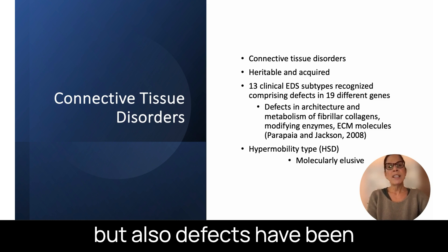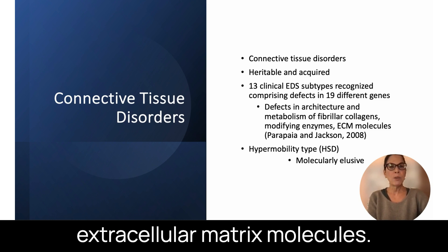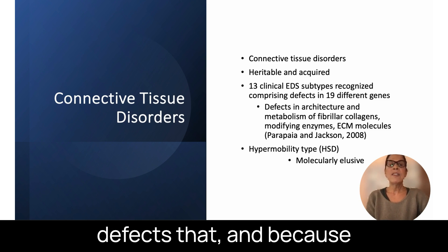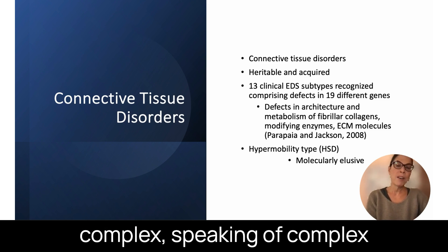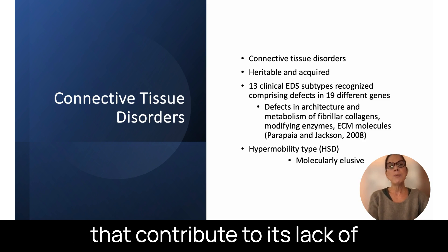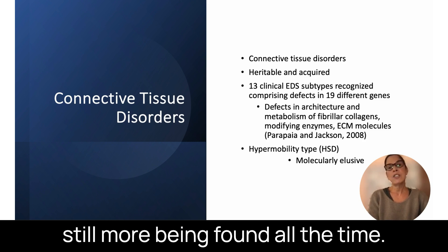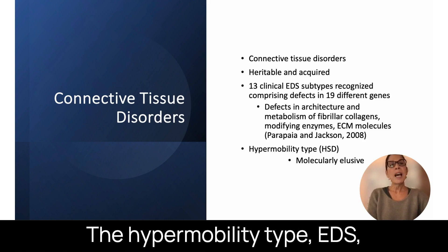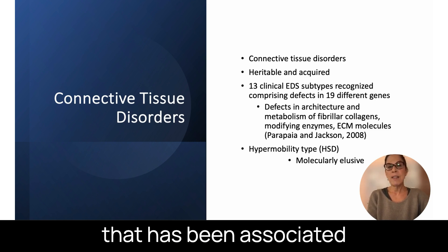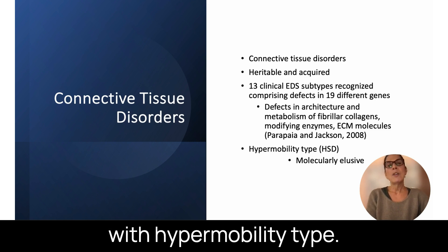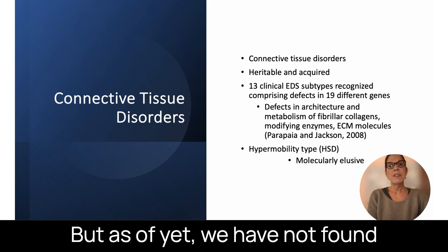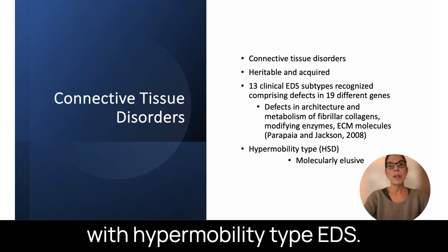There are modifying enzymes, but defects have also been identified in some of the extracellular matrix molecules — the proteoglycans, the glycoproteins, the glycosaminoglycans. Because connective tissue is so complex, there are a lot of different defects that contribute to its lack of structural integrity, and more are still being found. The hypermobility type EDS has been molecularly elusive; we have not yet found the genes associated with it, though several labs are working on it and feel they are coming close.